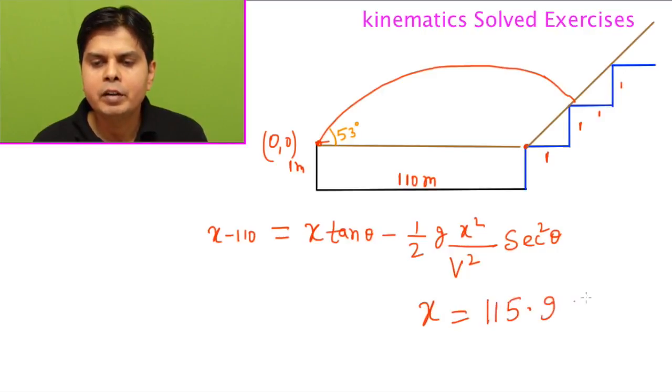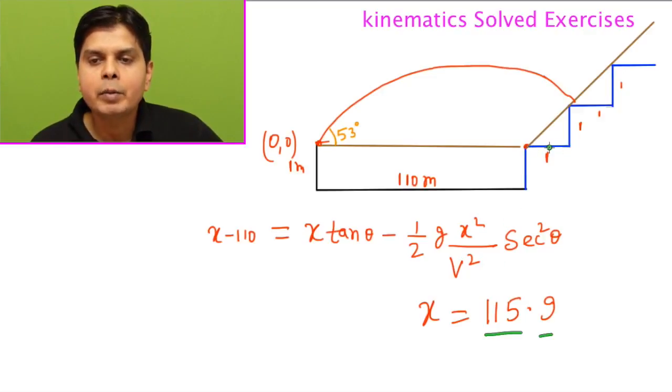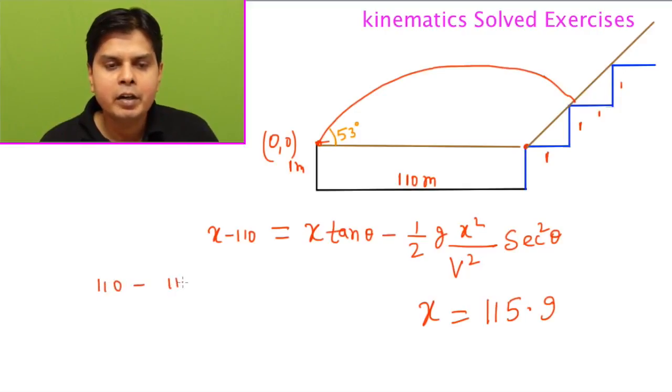When you solve for x, suppose you get 115.9 meters. If x is between 110 and 111, this means it lands on the first bench. If it's between 111 and 112, the x value means it goes to the second bench. If between 112 and 113, then the third bench, and this way you can go further.